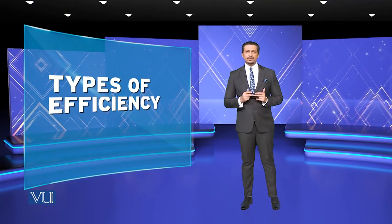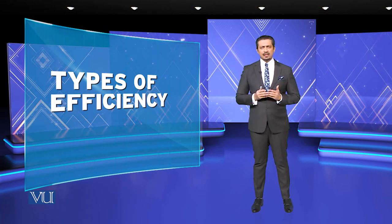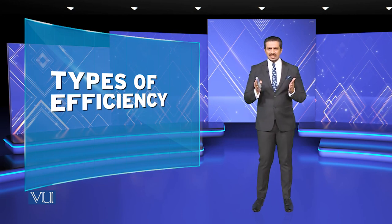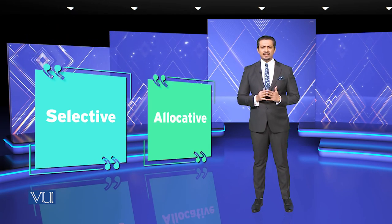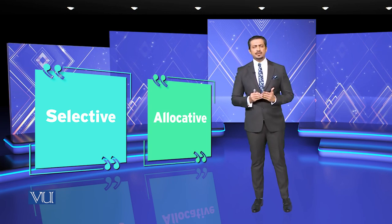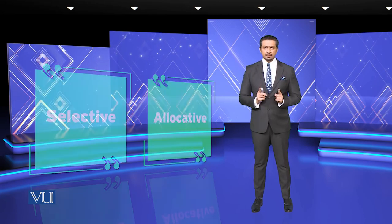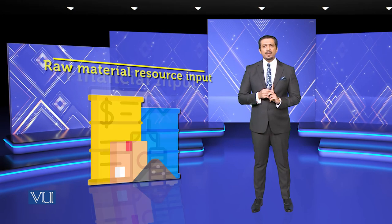We have discussed the types of efficiency. One thing we have discussed is that we have calculated resources. We have input three types: human resource-based input, financial input, and raw material resource input.